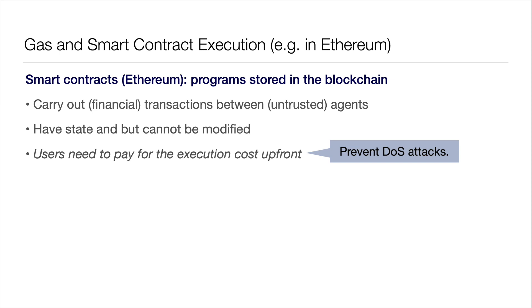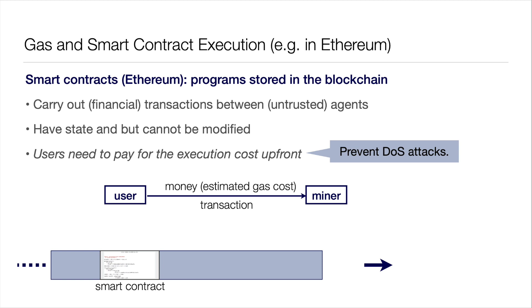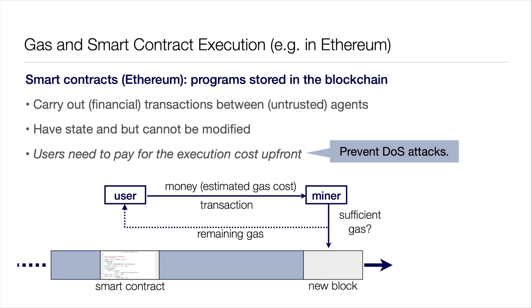The execution cost of these smart contracts always plays a role one way or another. You have a distributed system and people have to agree on the outcome of an execution, which makes the system vulnerable to denial of service attacks. One way to deal with that, done in Ethereum, is to introduce the notion of gas and have users pay in advance for the execution cost. When you want to interact with a smart contract, you provide some amount of gas. If you pay a sufficient amount, the remaining gas is returned. If insufficient, all your gas is lost and the transaction does not happen.